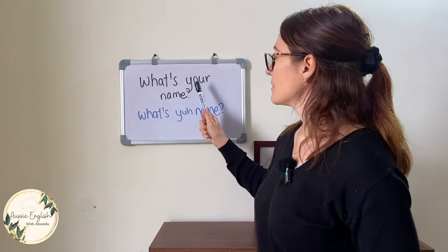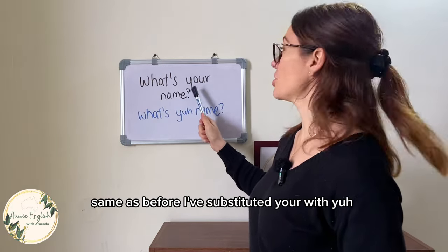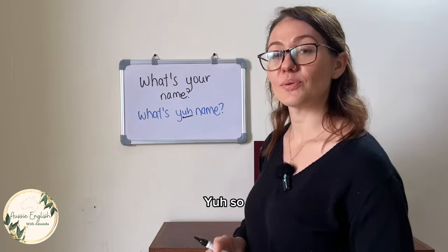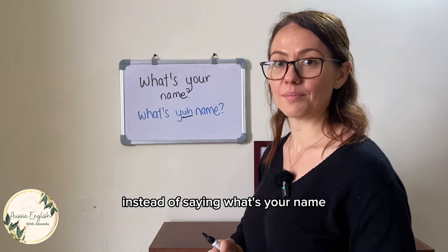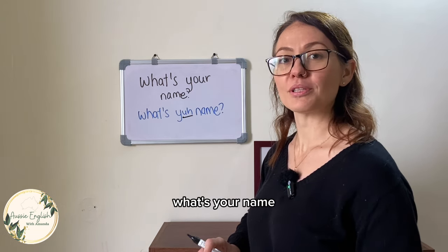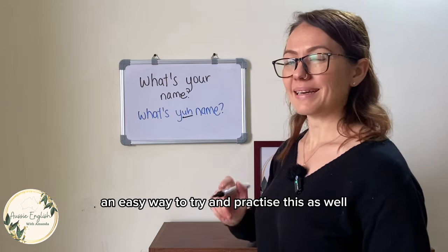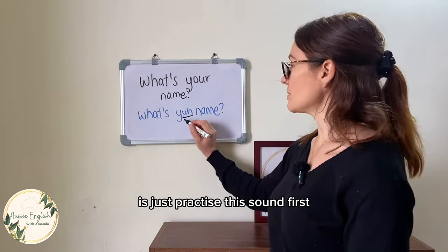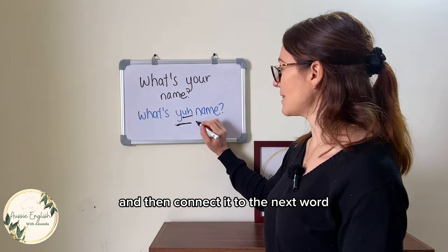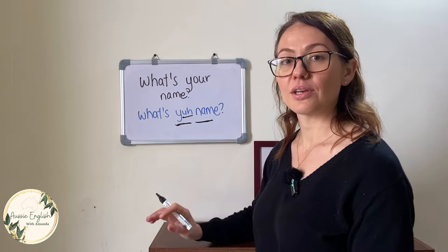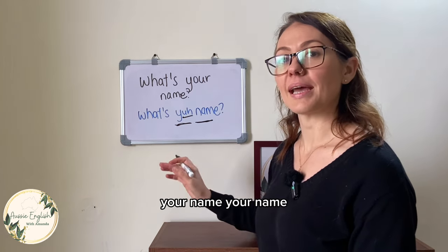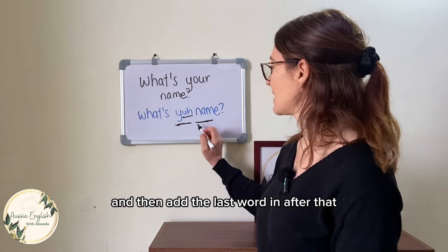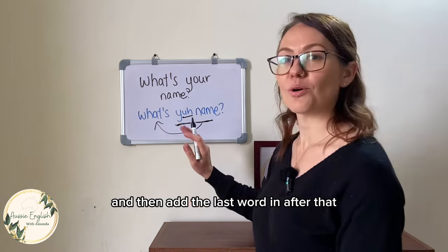For the next sentence, I've substituted 'your' with the schwa version. So instead of saying 'What's your name?' we say 'What's yuh name?' An easy way to practice this is to try linking the sounds together — just practice the schwa sound first, then connect it to the next word: 'yuh... yuh name... yuh name... what's yuh name?' Then add the rest of the sentence.